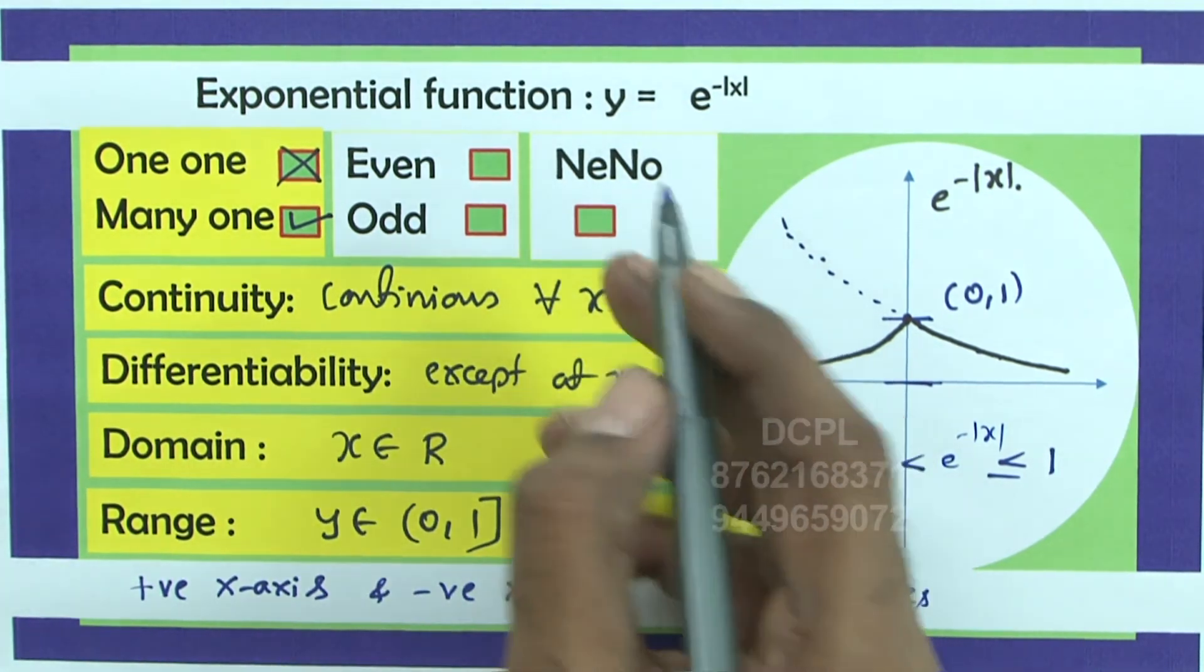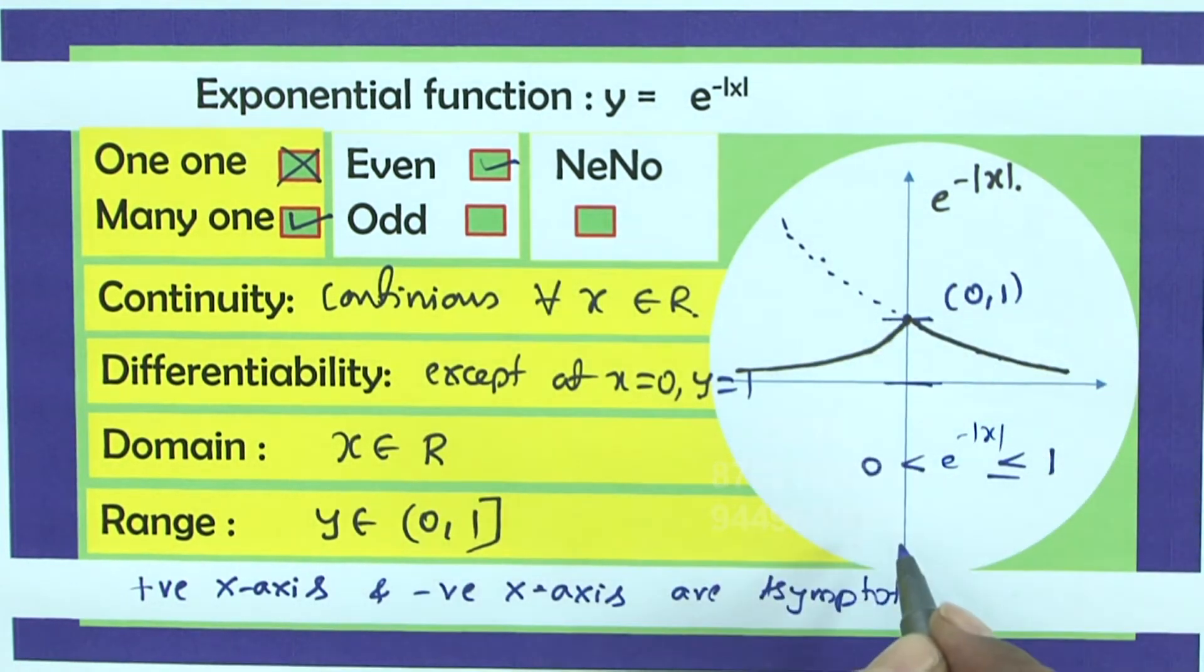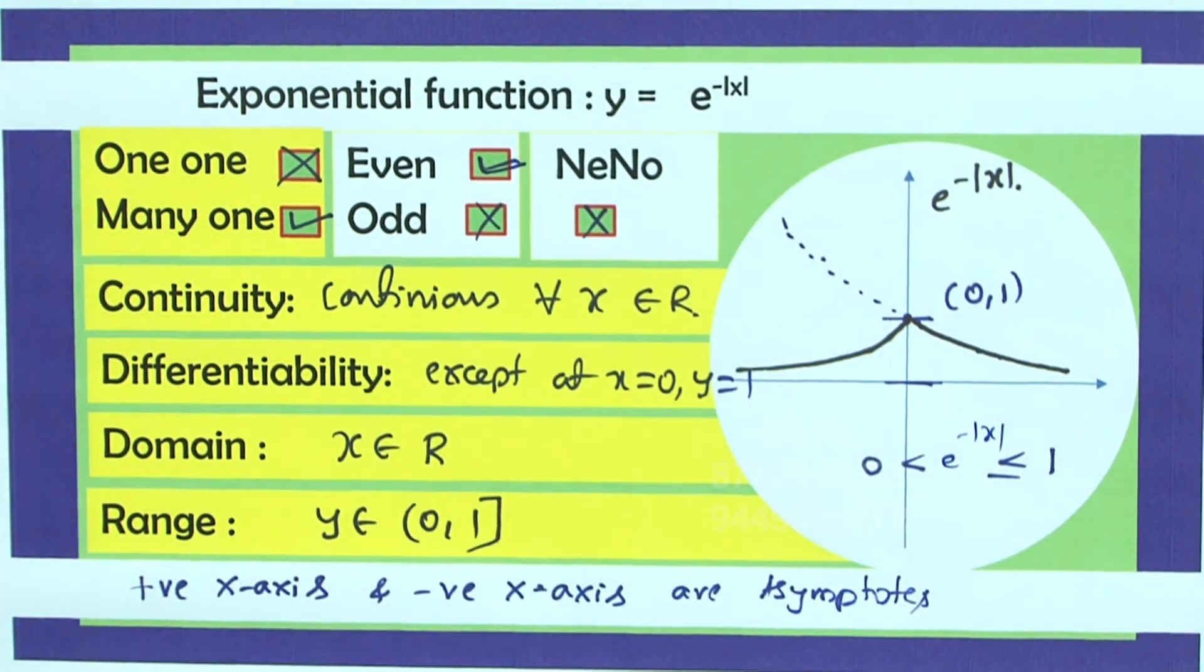And e power minus mod x is an even function because we can see there is a symmetry. It is not an odd function, not even-neither function.